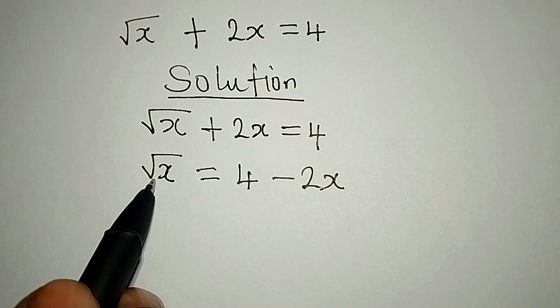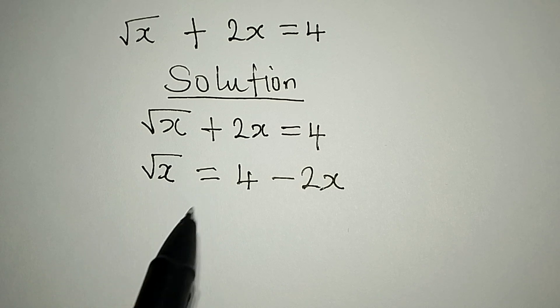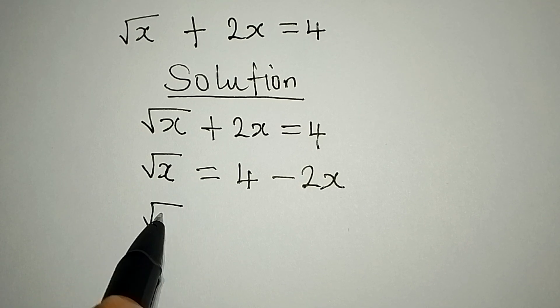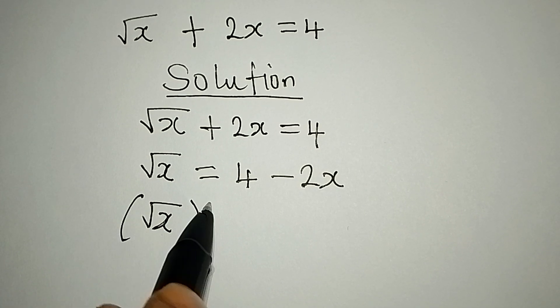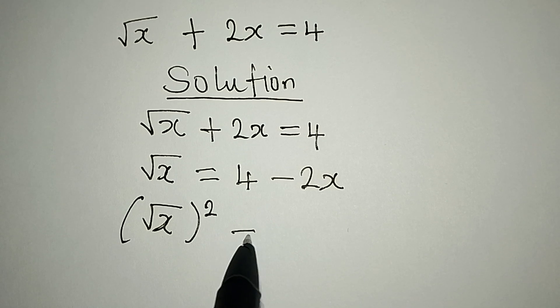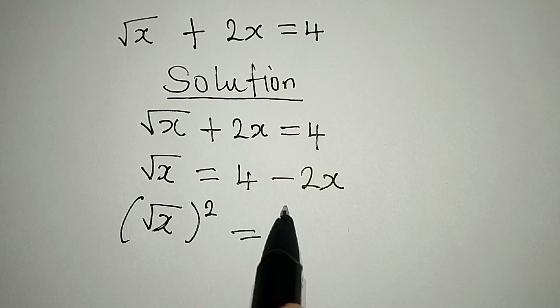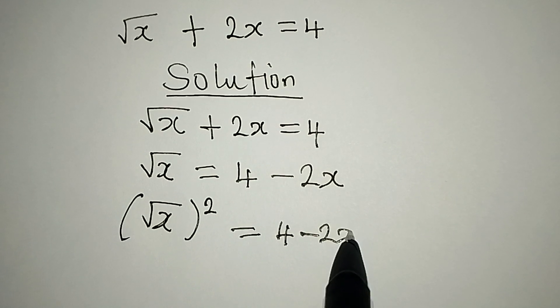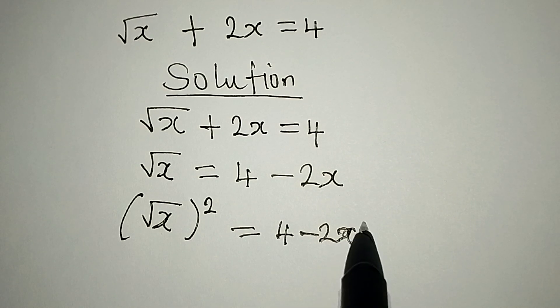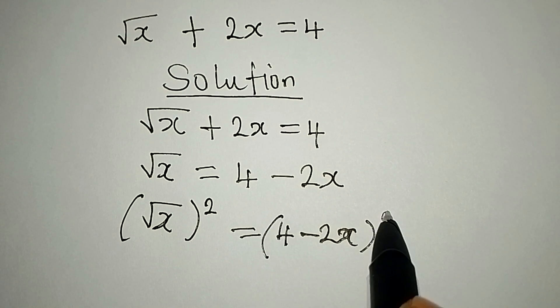The next thing is to remove the square root from here as we square square root of x. So this same square here will reflect on the right, 4 minus 2x to the power of 2.